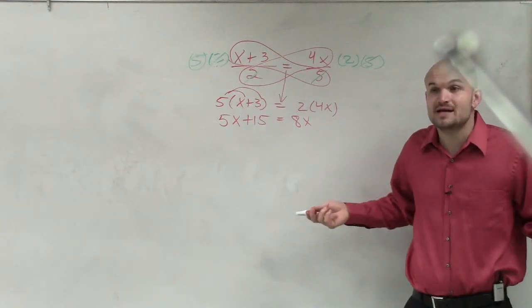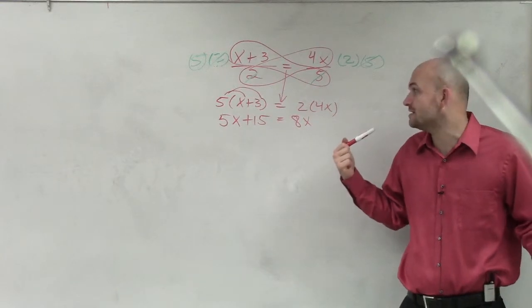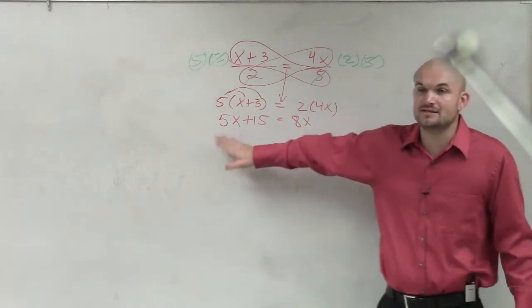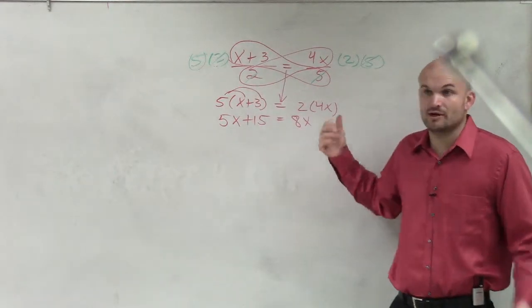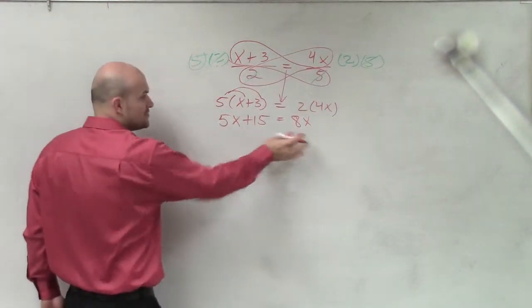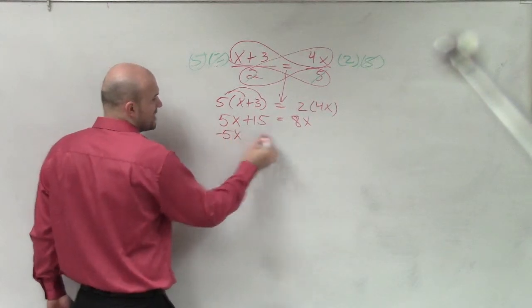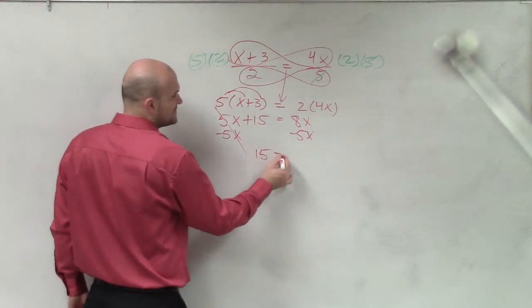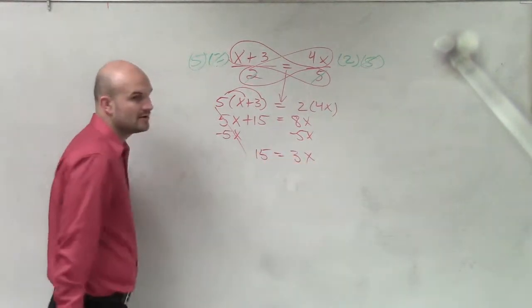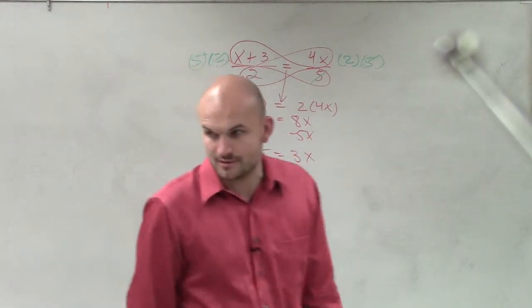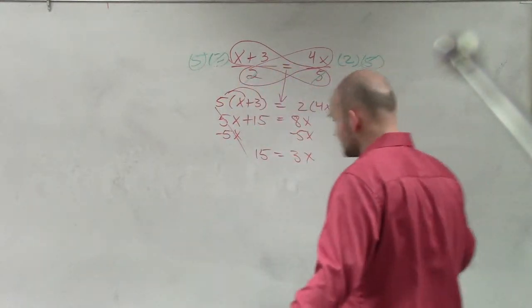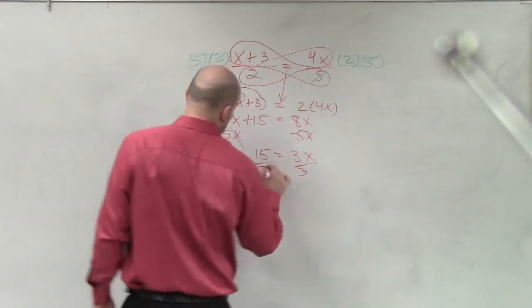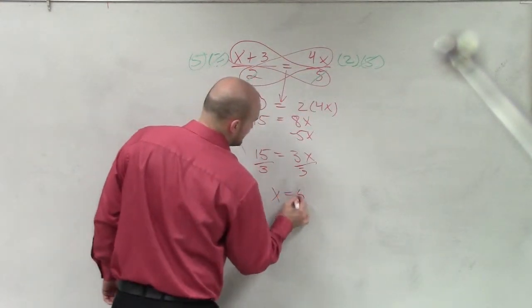I need to get the x's on the same side. So if she wants to get them on the right side, that means I'll subtract the 5x — I need to subtract that whole term so it goes to 0 — and I have 15 equals 3x. Now Camilla, what's my next step? Isolate the variable. Since my variable is being multiplied by 3, I now need to divide by 3. Therefore, x equals 5.